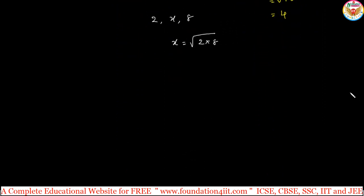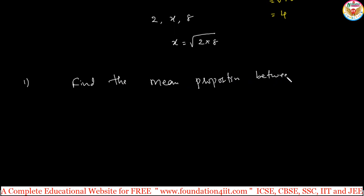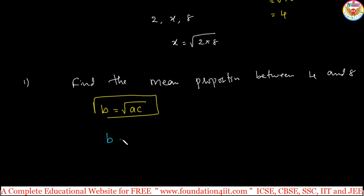Let us see the examples now. First question: find the mean proportion between 4 and 8. The formula is mean proportion B equals square root of A into C. So the mean proportion B equals square root of 4 into 8, which is square root of 32. That is the mean proportion answer, or simplify if possible.